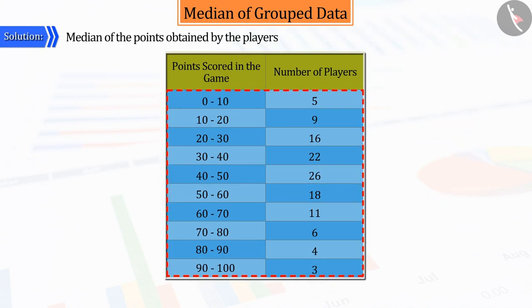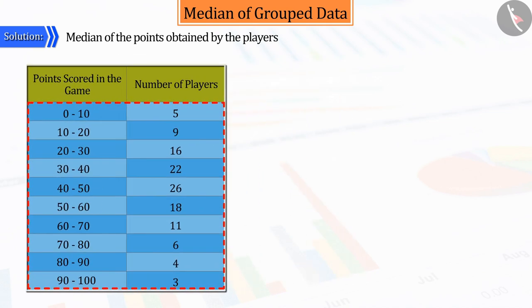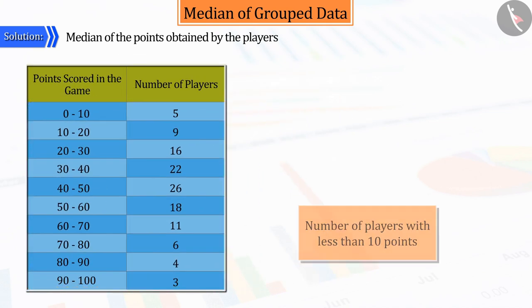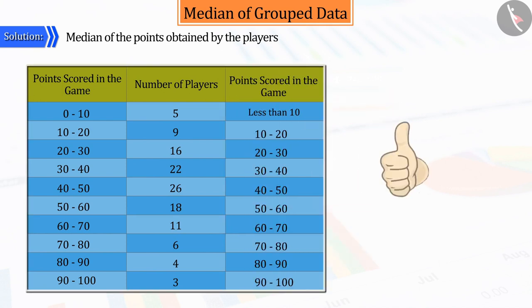Let us first discuss the given table. If you were asked, how many players got less than 10 points, would you be able to tell? Absolutely correct. 5 players scored less than 10 points.